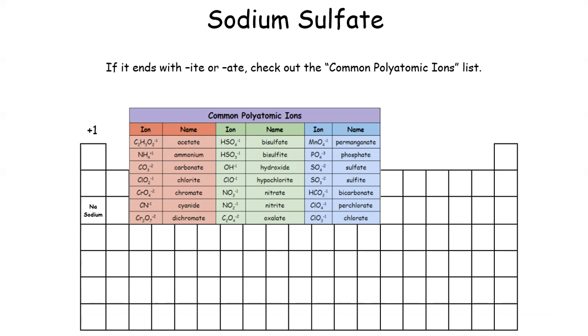One little trick here is if you see ITE or ATE in the name, you want to come and look at your common polyatomic ion list to see if that name is there. Although there are some exceptions such as ammonium or cyanide, if you see an ATE or ITE at the end, come check it out. Check out this list.